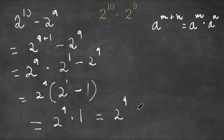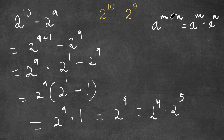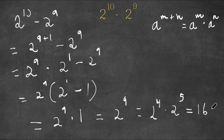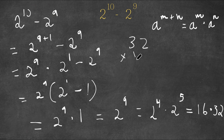Now for 2 to the power of 9, this is equal to 2 to the power of 4 times 2 to the power of 5, because a to the power of m plus n is equal to a to the power of m times a to the power of n. So 2 to the power of 4 is 16, 2 to the power of 5 is 32, so we have 16 times 32.